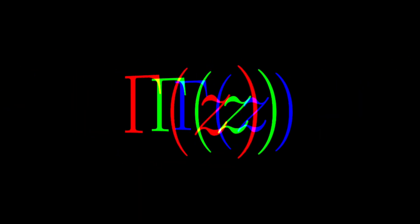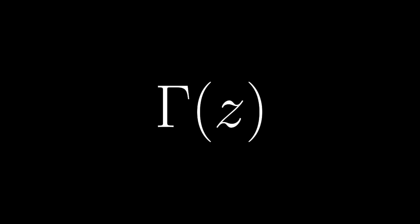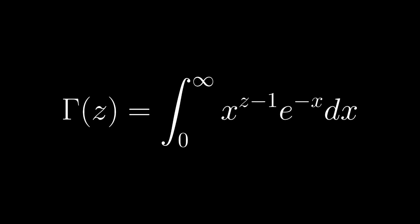But of course, some joker out there is going to ask for the factorial of 1 half. It turns out we can interpret factorials for fractions, or even irrational numbers, using the gamma function. The gamma function is defined for any complex number using the following integral.